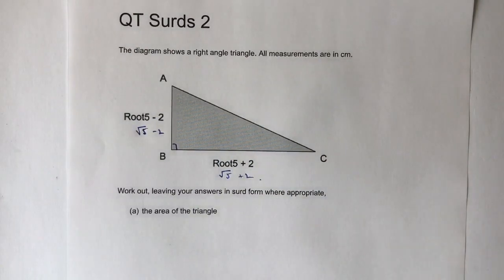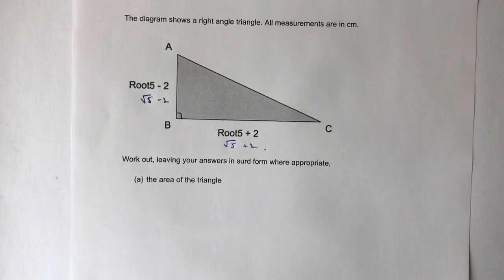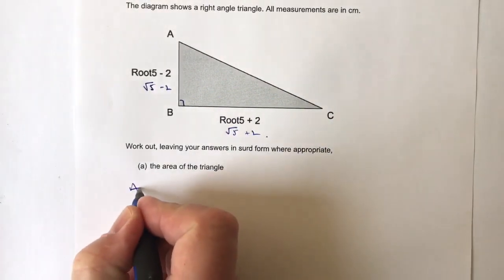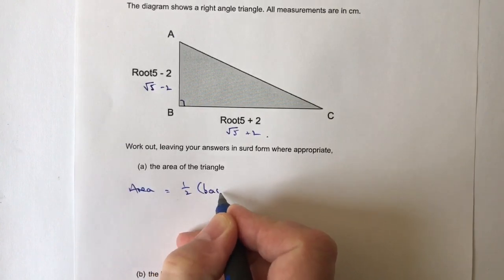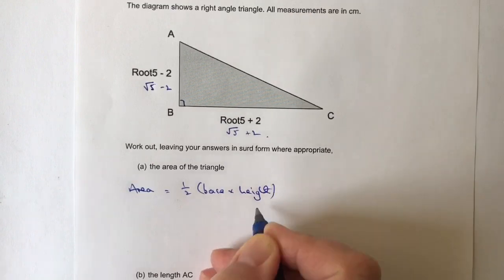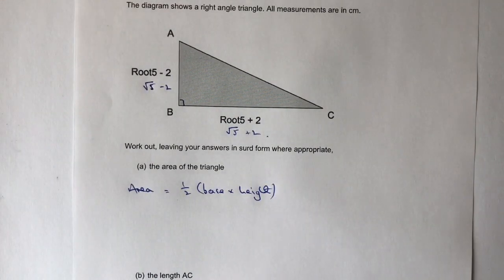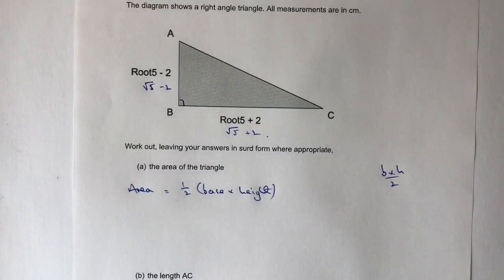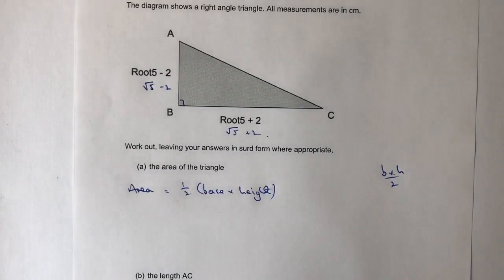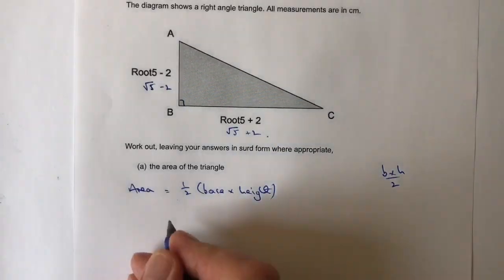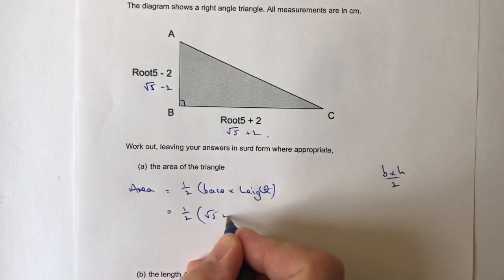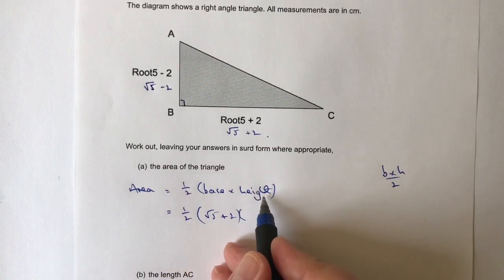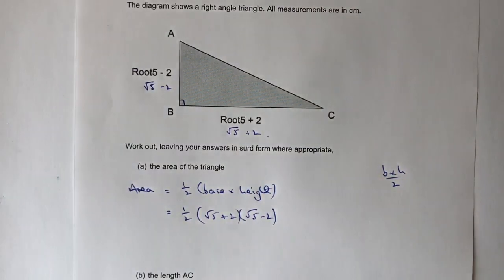The first thing I'm going to do is work out the area of the triangle. The area of a triangle is simply a half times base times height — some people write it as b times h over 2, that's perfectly fine. So I'm going to plug in the information: it's a half, then the base is √5 plus 2, multiplied by the height which is √5 minus 2.